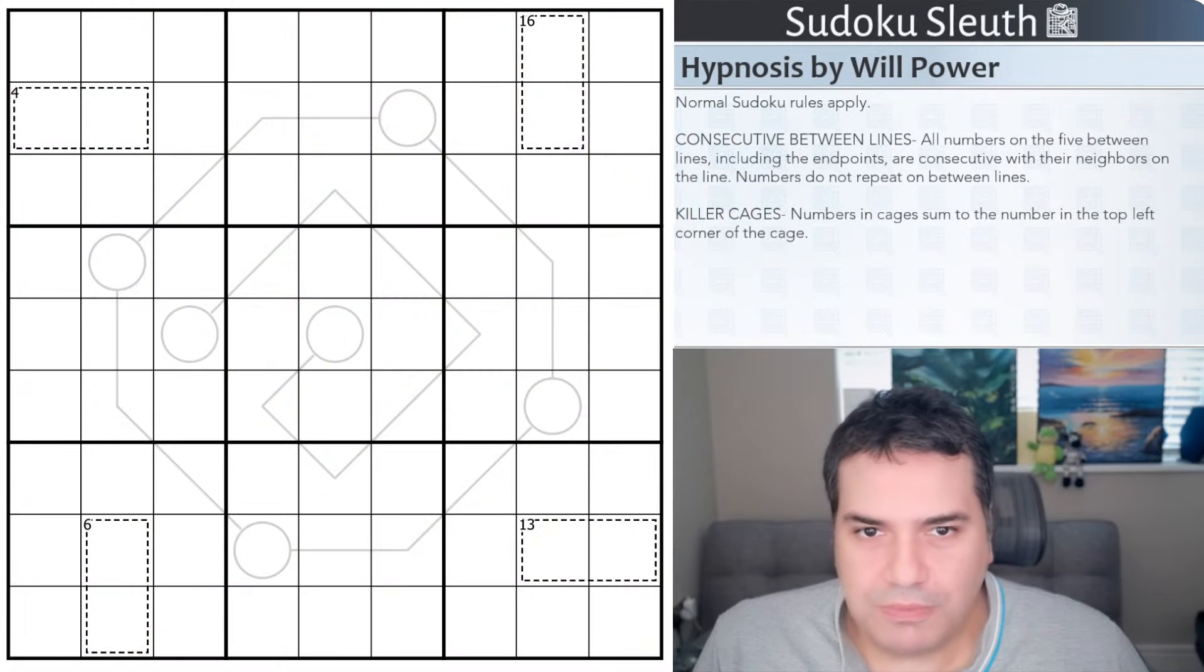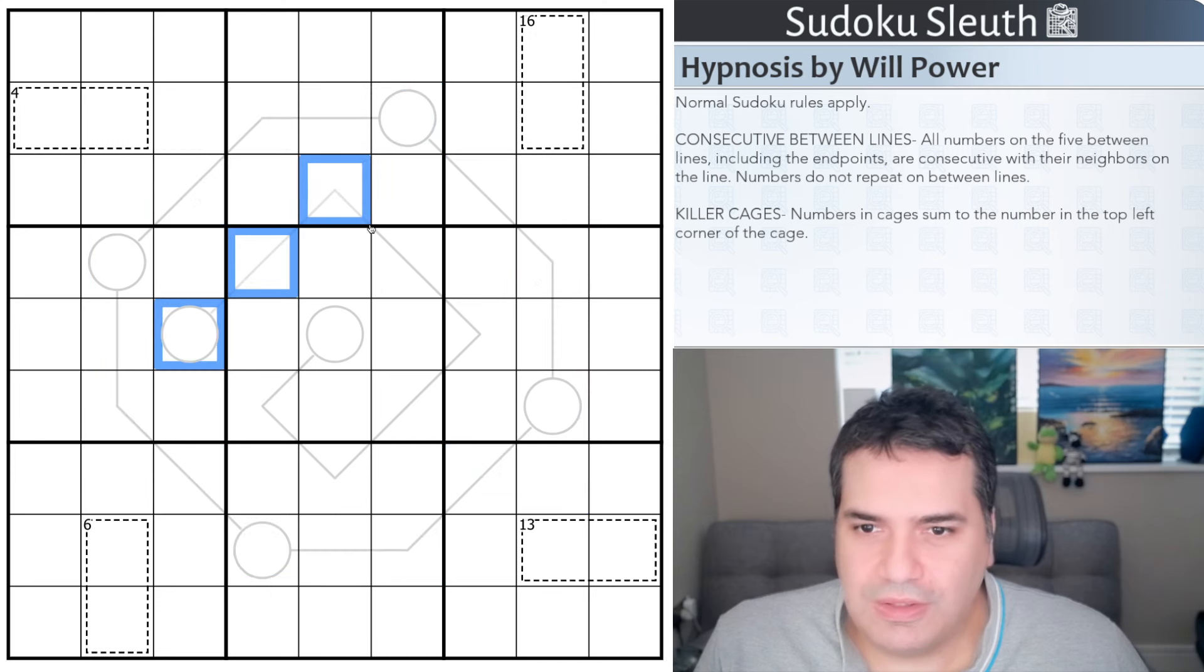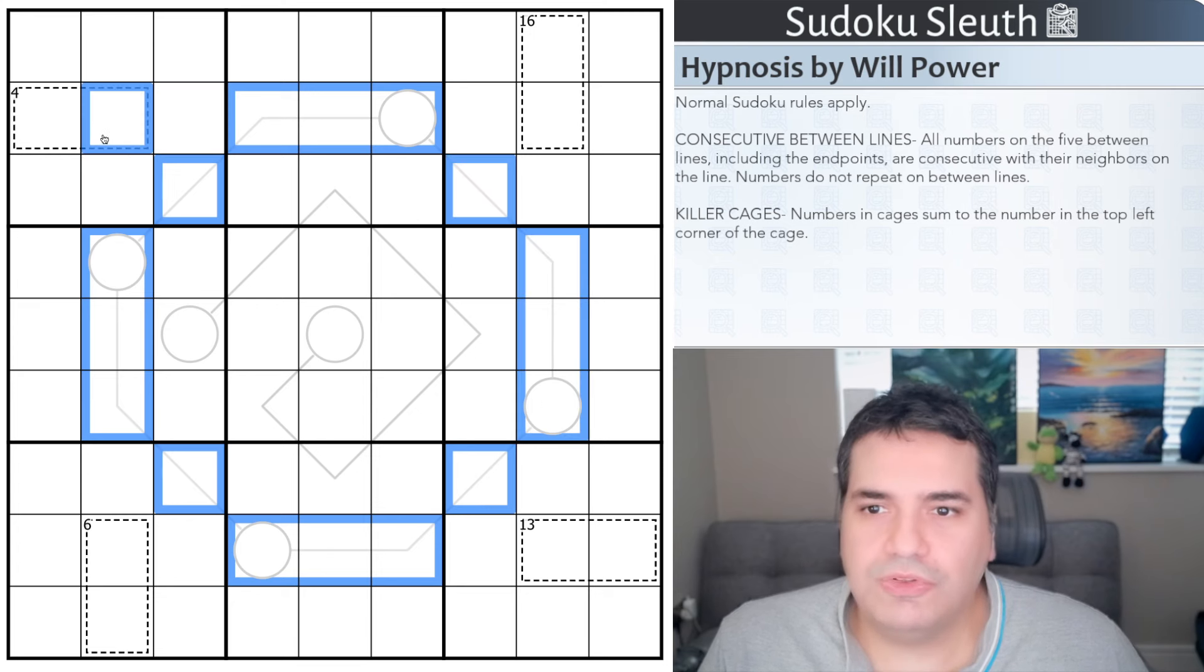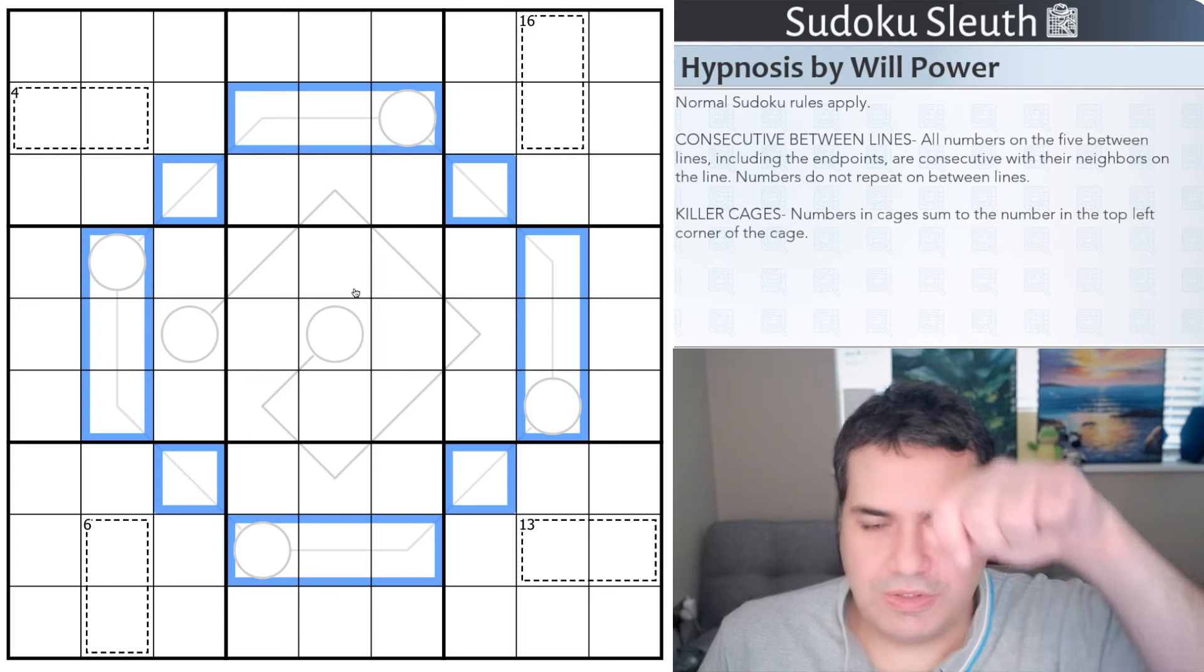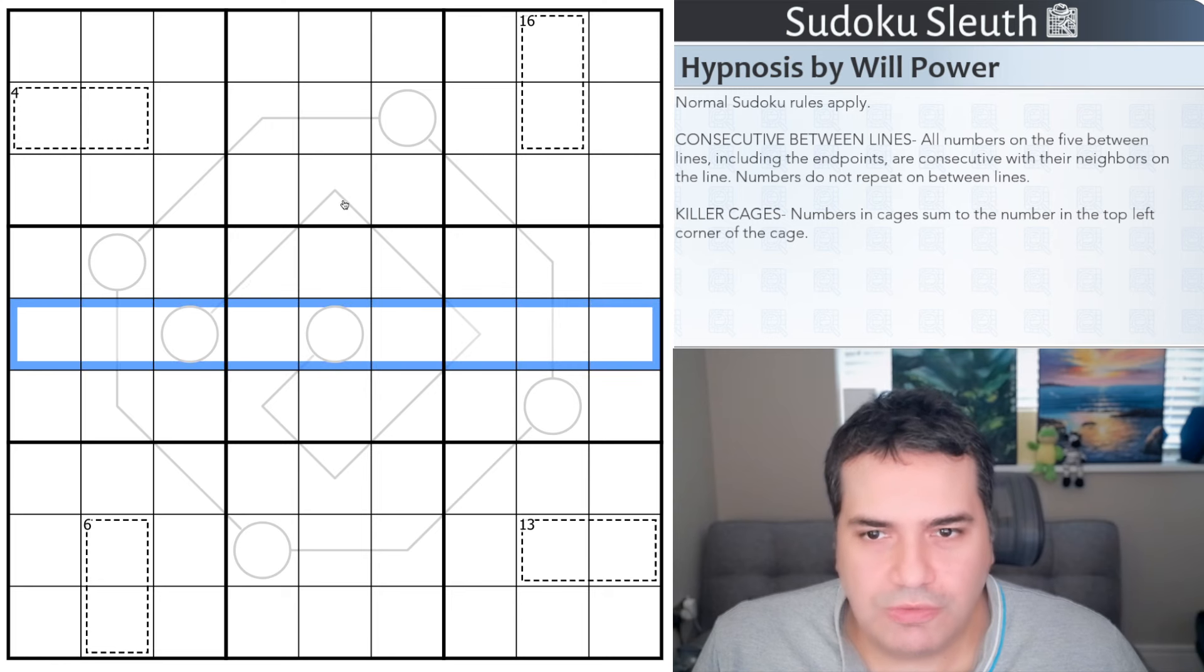We're looking at Hypnosis by Will Power. And just before we take a look at the rules, as always from Will Power, the grid represents what is going on. It's almost like a hypnotic symbol in the middle, like a pendulum swinging back and forth with some intricate design. Normal Sudoku rules apply - place the digits one to nine once each in every row, column, and three by three box.